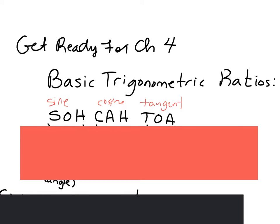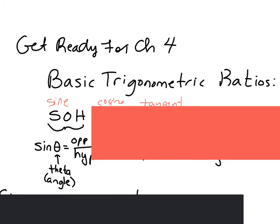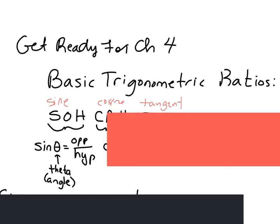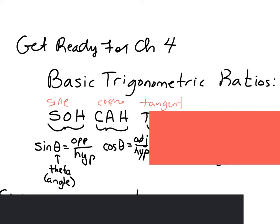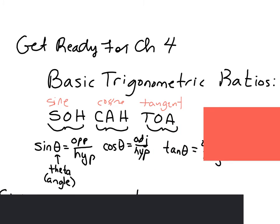Many times, teachers will use something called SOHCAHTOA as a way to remember what they are. First, let's start with sine. Sine of some angle, which many times we're going to designate with a theta, is going to be opposite over hypotenuse. Cosine is going to be adjacent over hypotenuse. And tangent is opposite over adjacent.